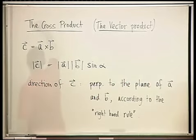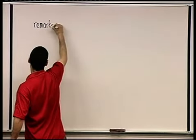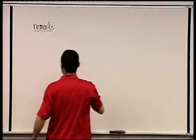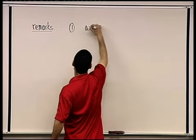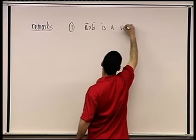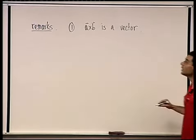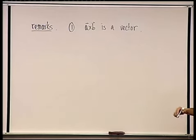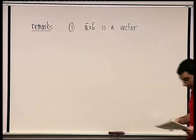Remark number one: A cross B is a vector. That's why it's called the vector product. That's very different from the dot product — the dot product gives a scalar, but the cross product gives a vector.